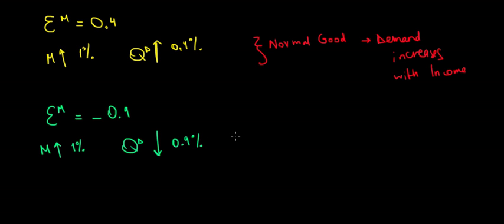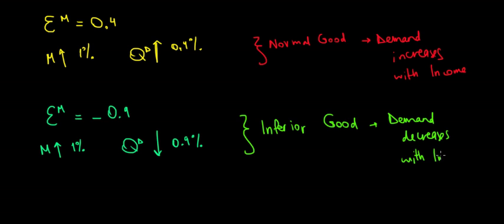In this case, we're speaking about inferior goods. So, inferior good, where demand decreases with income because we switch to some better alternatives.